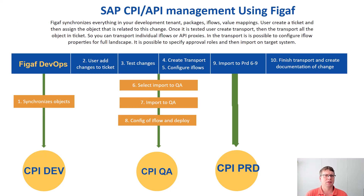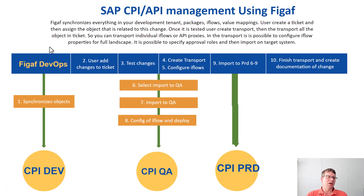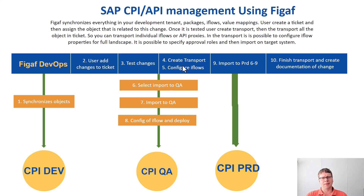The way we're doing transport — and it's the same also for API management — all works together in one simple way. From the figaf tool you synchronize objects, and you can also from CPI go back using a CPI helper and add it to a ticket. You perform tests, then you create transports and configure the iflow, then you can select import in QA. Once you have tested in QA, you create a new transport and move it into production, and then you're done.